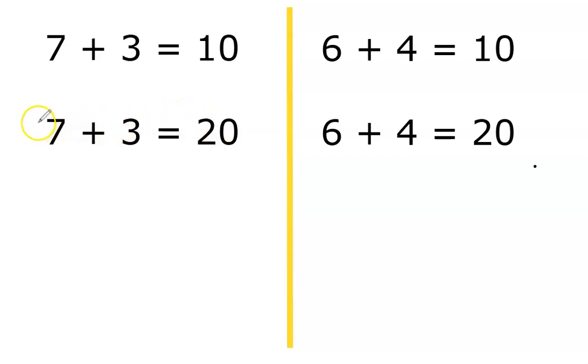We are going to add either a 1 here, 17 plus 3 equals 20, or we'll insert our 1 here. Just one more ten. 7 plus 13 equals 20.